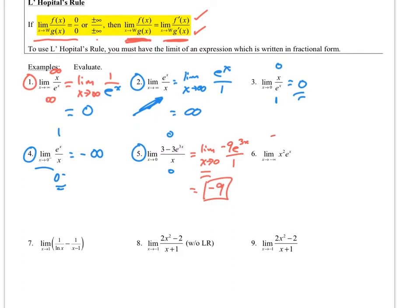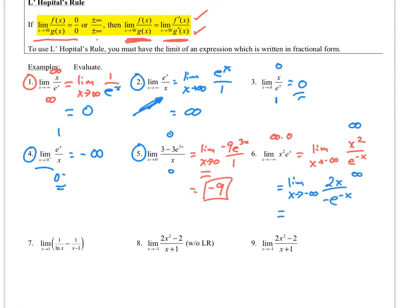Number 6: we have infinity times 0, which is not the form we want. However, we can rewrite this as x squared all over e to the negative x, as x goes to negative infinity. Plugging in negative infinity gives infinity over infinity, so now we can use L'Hopital's Rule. Taking derivatives gives negative infinity over negative infinity, so we apply L'Hopital's a second time. That brings us back to 2 over e to the negative x. Plugging in negative infinity gives 2 over infinity, which equals 0.